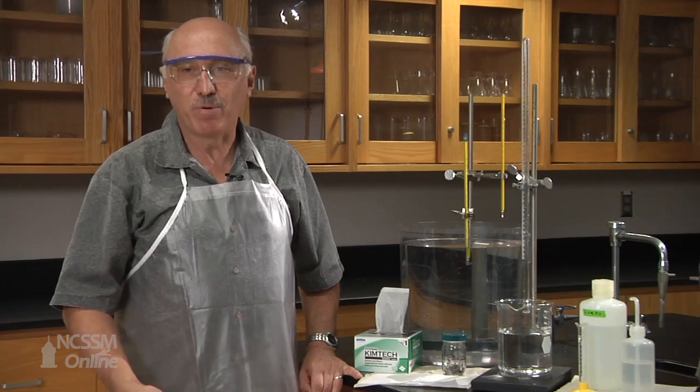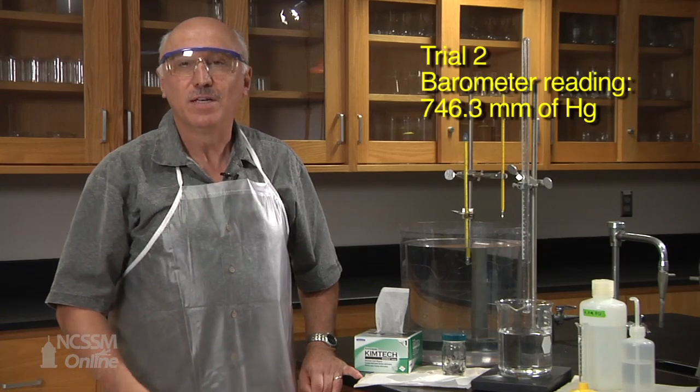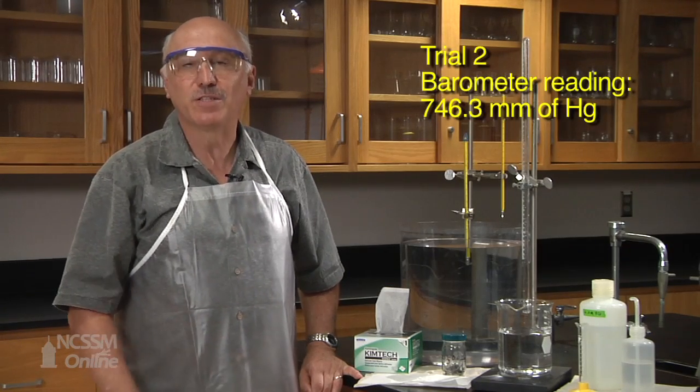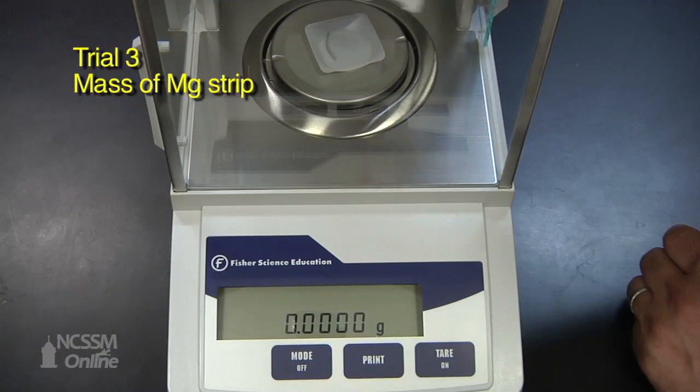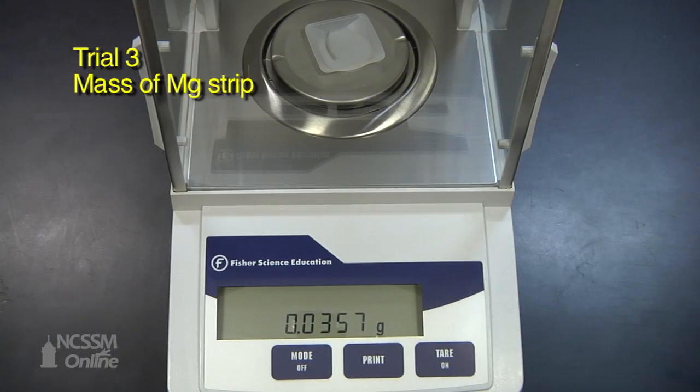The atmospheric pressure for trial two was 746.3 millimeters of mercury and now we will proceed to trial three.